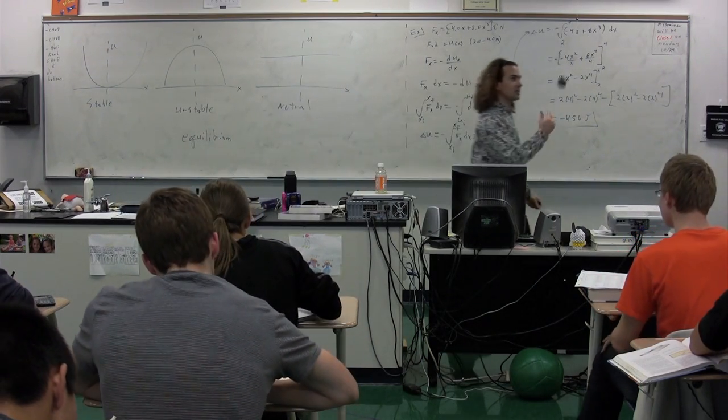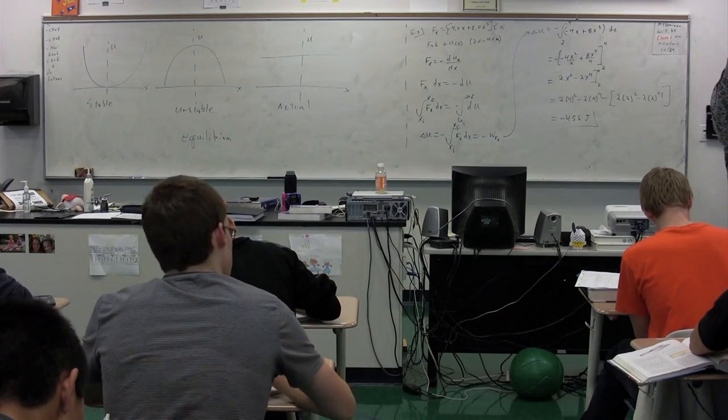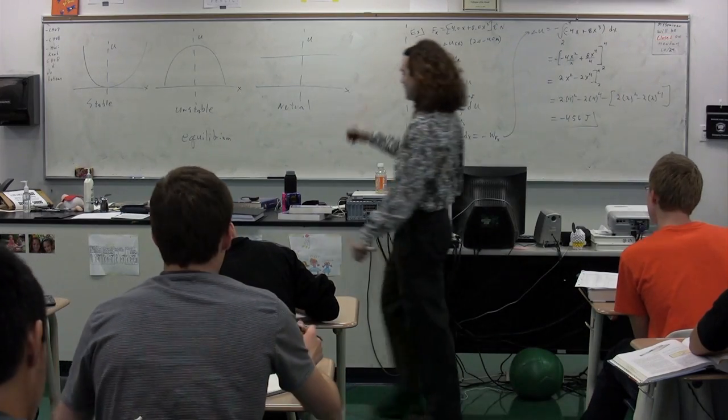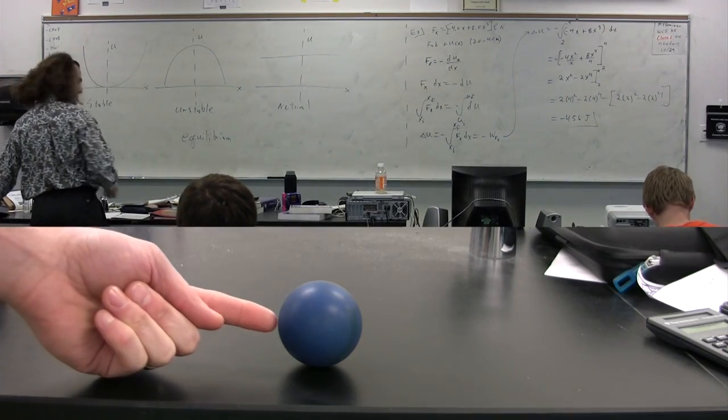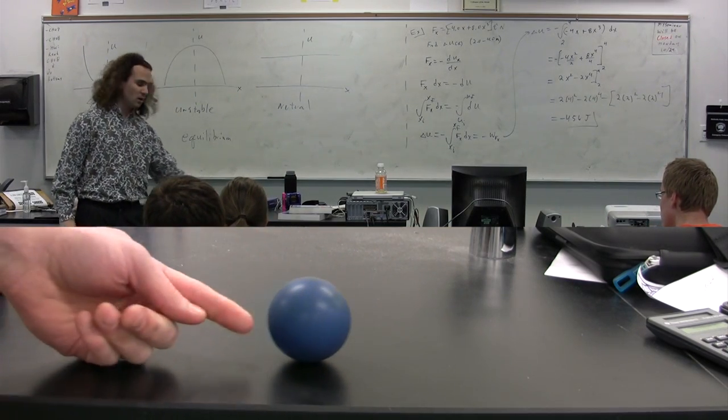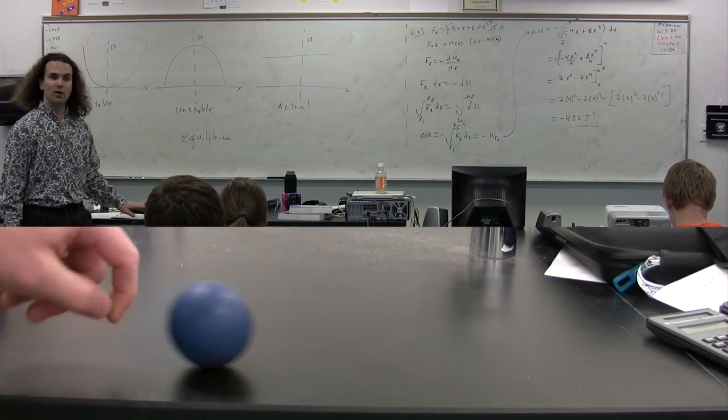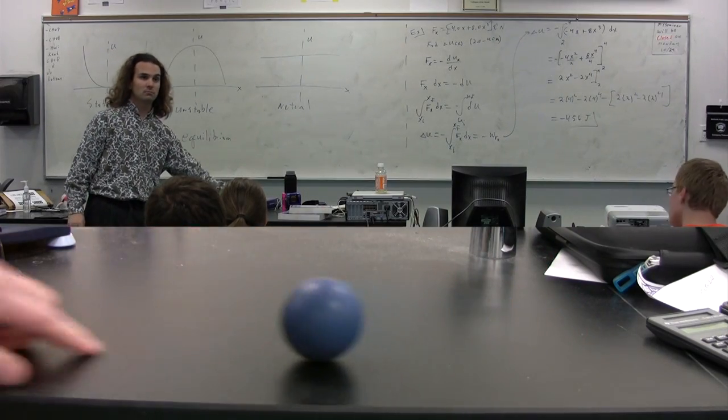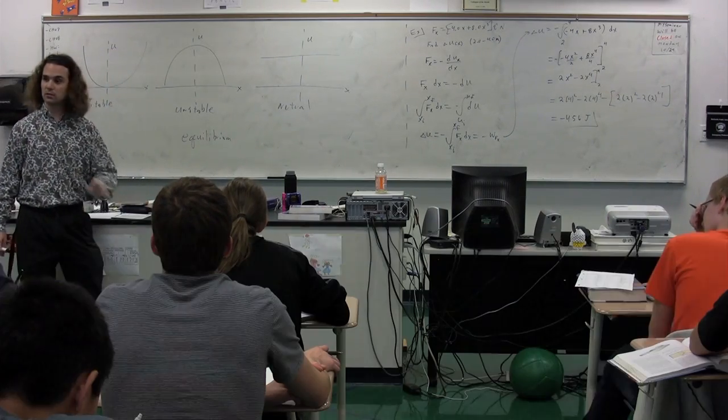This is an example of something that has neutral equilibrium. When I take and I displace the object, the center of mass does not go up, therefore it does not gain gravitational potential energy. That is neutral equilibrium.